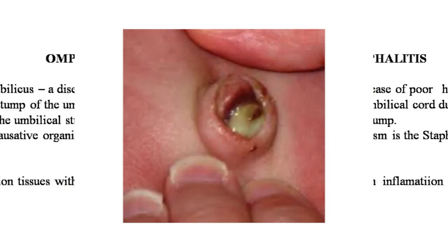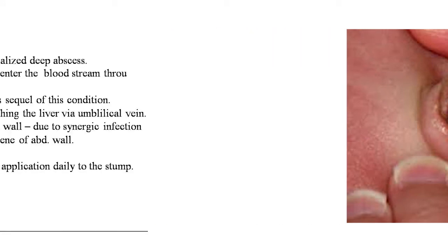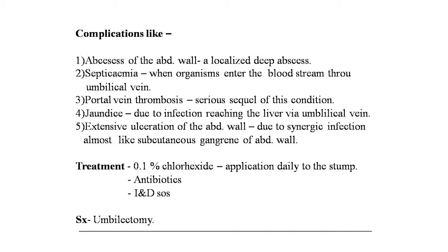Clinical features of omphalitis include exuberant granulation tissue with inflammation of the surrounding abdomen. An image of typical omphalitis is shown on screen. Complications include abscess of the abdominal wall, localized deep abscess, septicemia when organisms enter the bloodstream through the umbilical vein, portal vein thrombosis, jaundice due to infection reaching the liver via the umbilical vein, and extensive ulceration of the abdominal wall due to synergistic infection resembling subcutaneous gangrene.